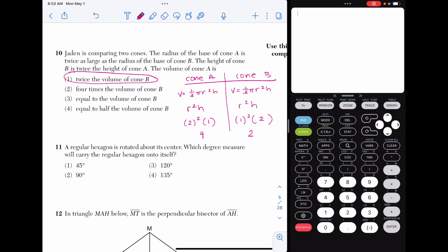Eleven, a regular hexagon is rotated about its center. Which degree measure will carry the regular hexagon onto itself? I love these questions because it's a nice, quick formula. It's 360 divided by the number of sides. This is assuming it's a regular polygon, which it is. So 360 divided by 6 is 60. And if you're like, well, that's not an answer choice, any multiple of 60 will also work. So which one of these answer choices is a multiple of 60? Choice 3, 120.